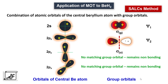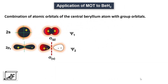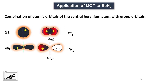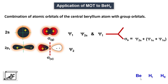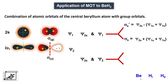Let's see the scheme for the formation of molecular orbitals. There are four atomic orbitals available for bonding: 2s, ψ1, 2pz, and ψ2. When the 2s orbital of beryllium combines with the ψ1 group orbital, two molecular orbitals are formed: the bonding molecular orbital σs and the antibonding molecular orbital σ*s, formed by subtraction. The 2pz orbital overlaps with ψ2 to form two molecular orbitals: the bonding orbital σpz, formed by addition, and the antibonding orbital σ*pz, formed by subtraction.